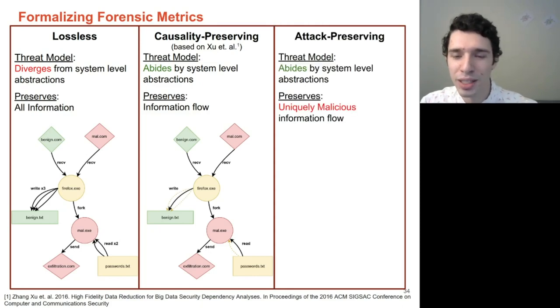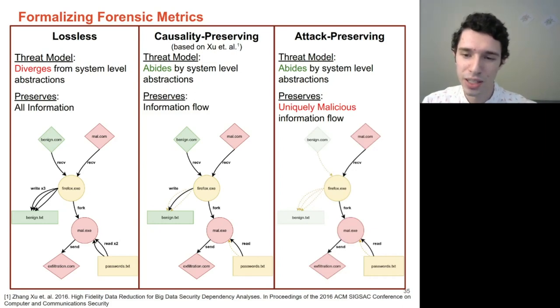Lastly, if we state that we only care about malicious information within the provenance graph, then we now come to our attack-preserving forensic metric. Under this metric, we only care about information flow that is uniquely malicious. Our definition of this is an event that has either directly or indirectly been influenced by a malicious entity and does not have a benign equivalent. We believe that this is a reasonable thing to do, as this information is what uniquely signifies a malicious actor and is thus what is interesting to forensic analysts. Underneath this, we can achieve the maximal amount of storage gains while still retaining forensically interesting and relevant information.